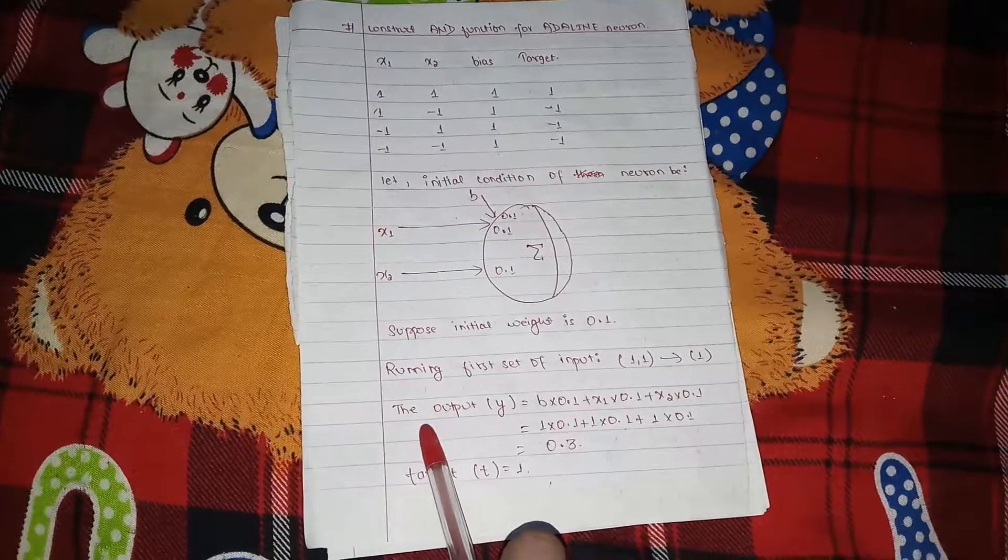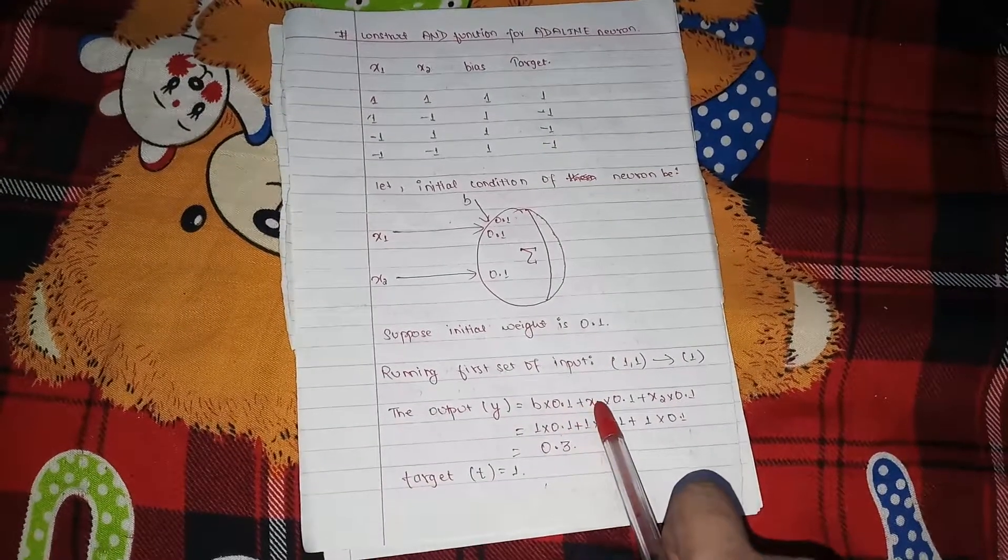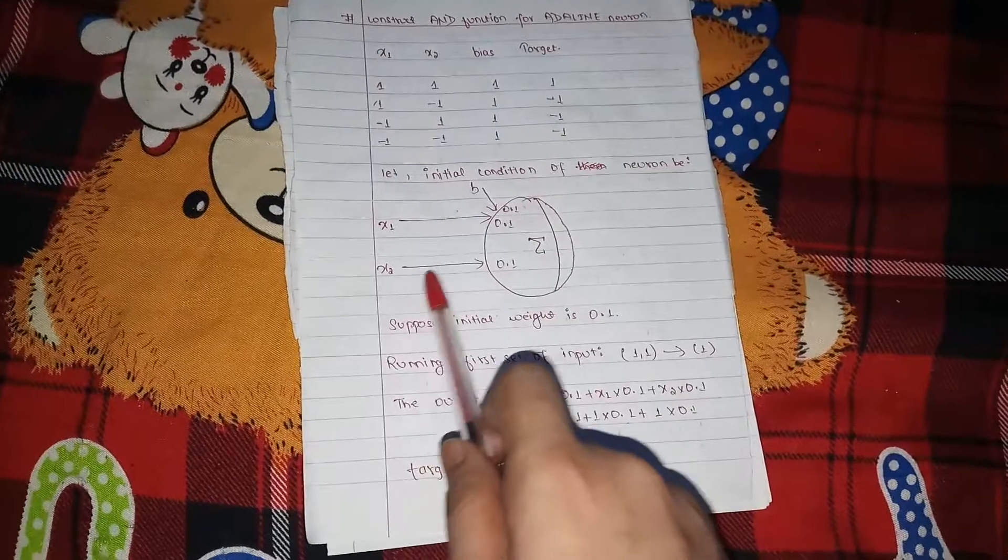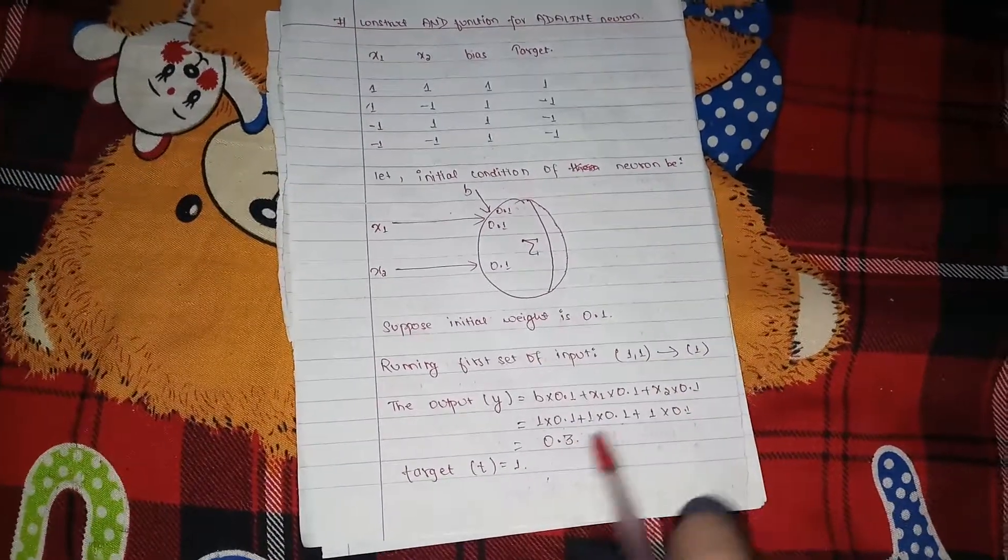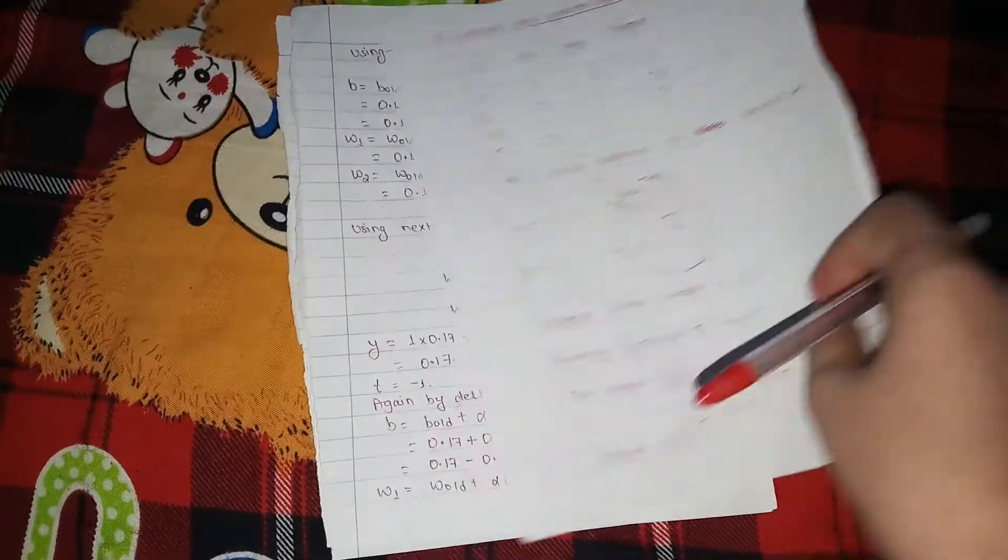So the output should be, output is B times 0.1, plus B times 0.1, plus X times 0.1, plus X2 times 0.1, so 0.3. But the target output was 1, we got 0.3.